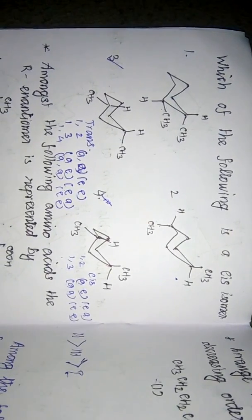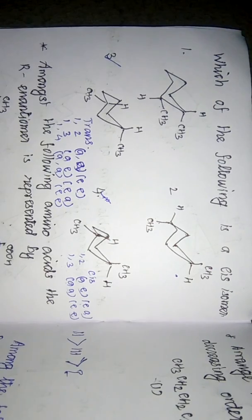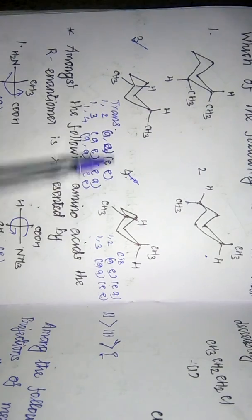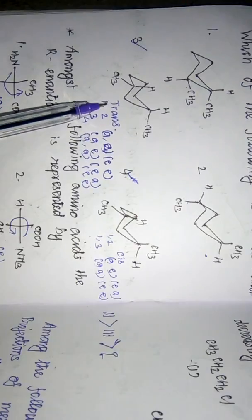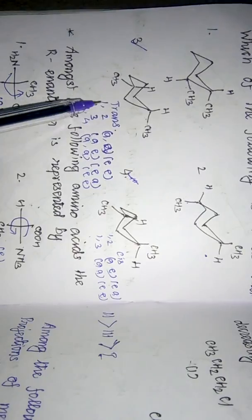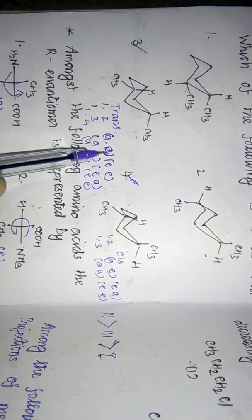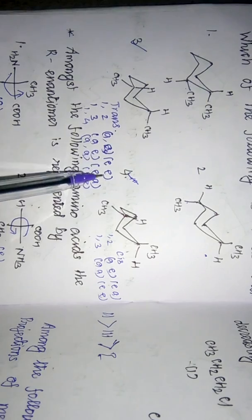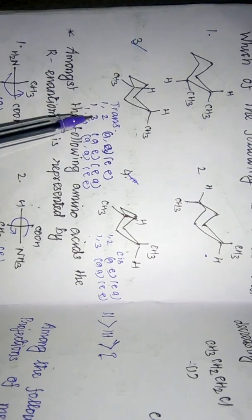The next important question asks which of the following is a cis isomer. Before answering, let's clarify the rules. For a trans isomer with substituents at the 1,2 position, both substituents should be axial-axial or equatorial-equatorial. For a 1,3-substituted compound, to get a trans isomer the first substituent should be axial and the third equatorial, or vice versa.